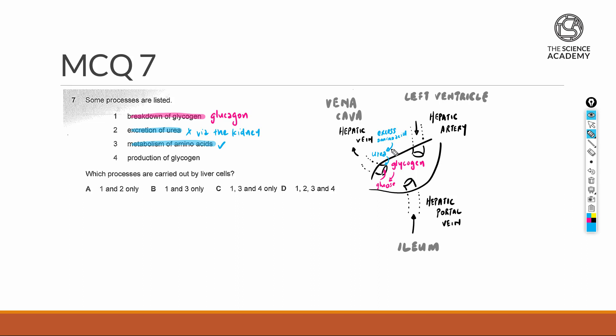Lastly, in option number four, the production of glycogen. This is conversely opposite of option number one. To produce glycogen, this is done in the presence of insulin.